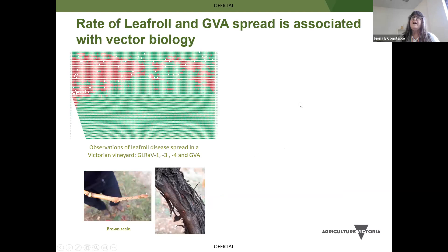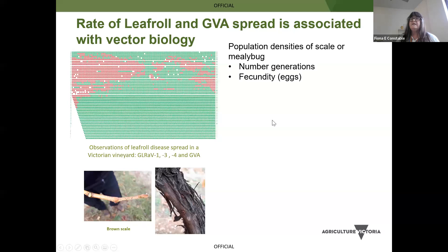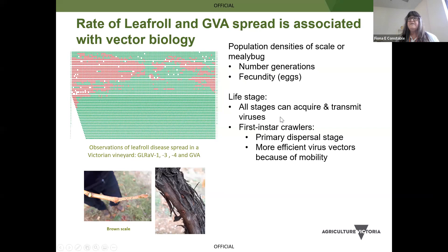Mealybug and scale tend to spread down rows rather than between rows because it's easier to crawl along from one vine to the other. In one particular vineyard, the person had leaf roll 1, leaf roll 3, leaf roll 4 and GVA all spreading simultaneously. Population densities affect the rate of spread of the viruses — the more insects you have, the greater the number of generations and the more eggs produced, which ultimately affects how quickly transmission occurs. All life stages can acquire and transmit the viruses, but the crawlers are the primary dispersal stage, efficient because they move so easily through a vineyard.